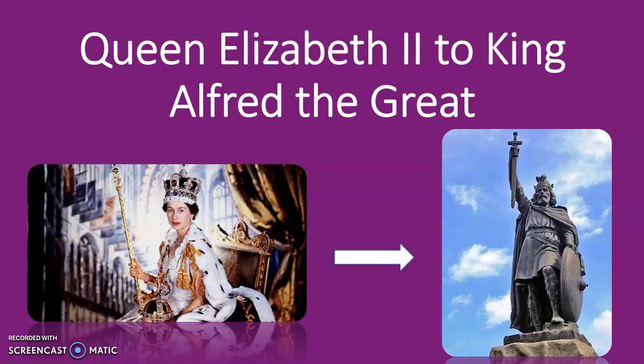Hey guys, so today I thought it might be fun since the world seems to be celebrating the Platinum Jubilee of Queen Elizabeth II, to see how exactly Queen Elizabeth II is connected back to some of the monarchs of England and the United Kingdom from centuries past. I'm going to try to get through this in the next 15 minutes in as painless and clear a way as possible. I'm not going to be discussing every monarch of Great Britain, but instead we'll simply be going in a direct paternal or in some cases maternal line. So we'll start with Queen Elizabeth's father and it'll simply be parent to parent, and I will show how Queen Elizabeth II is indeed a direct descendant of the legendary King Alfred the Great.